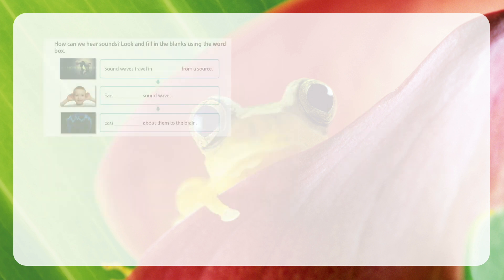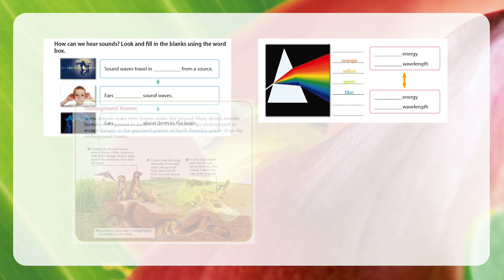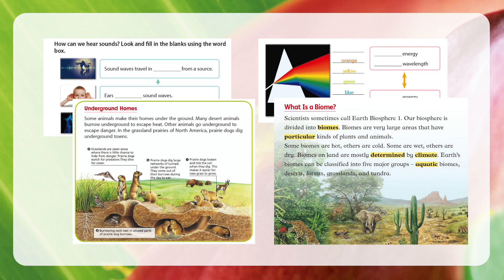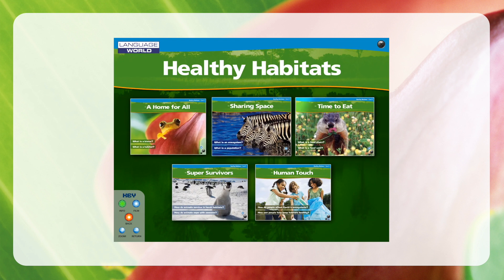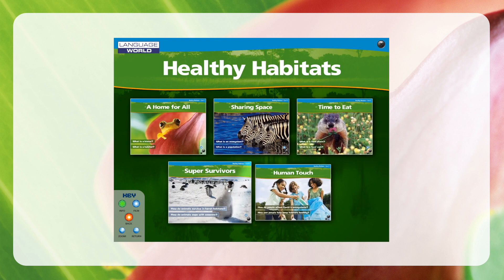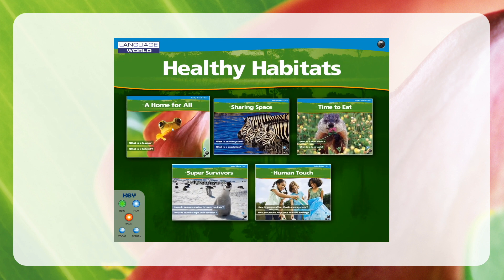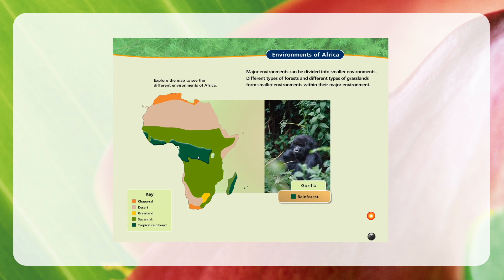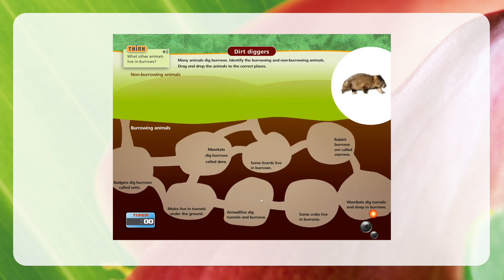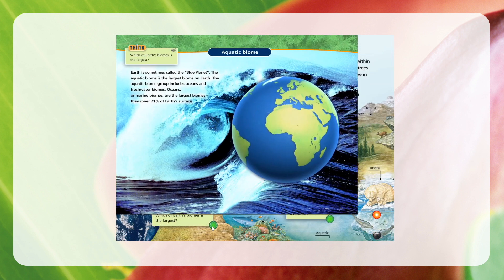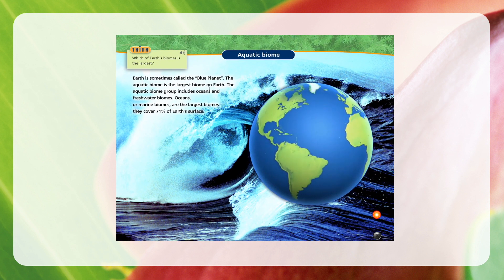It is designed to increase students' literacy by having them read and learn about science. The series contains many interesting and relevant topics on science, as well as activities appropriate to students' ages and learning abilities. By using Interactive Science Plus Second Edition, students can improve their English skills and also their knowledge of science.